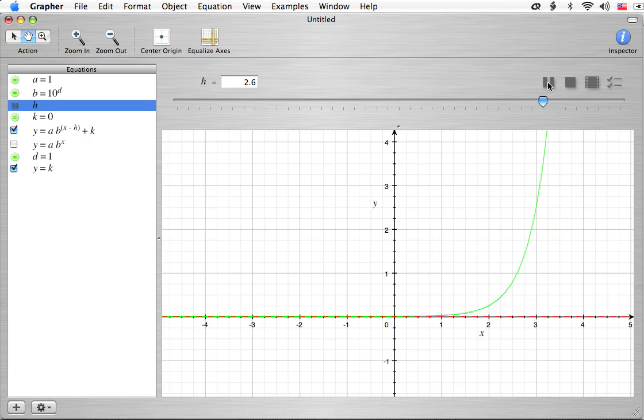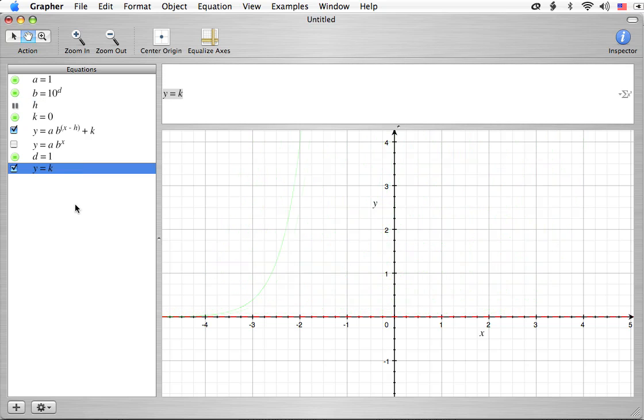So, that's it for h. h just moves the entire graph left and right. And you can see that has no effect on the asymptote. The asymptote is the red line that's down there. That's not being affected. Well, in reality it actually is, it's shifting left and right as well, but that has no effect on where it is.